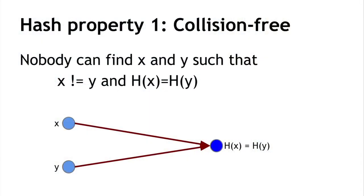The first property we need from a cryptographic hash function is that it's collision-free. What that means is that it's impossible — nobody can find values x and y such that x and y are different, and yet the hash of x equals the hash of y. If we look at the operation of the function, here's x and h(x), and here's y and h(y); nobody can find a situation where x and y are separate and yet hash to the same value. One thing to notice is that I said nobody can find — I didn't say there is no collision.